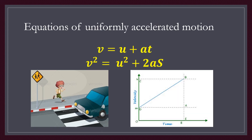The two equations of uniformly accelerated motion are: V equals U plus AT, and V squared equals U squared plus 2AS. Here V is final velocity, U is initial velocity, A is acceleration, T is time, and S is displacement.